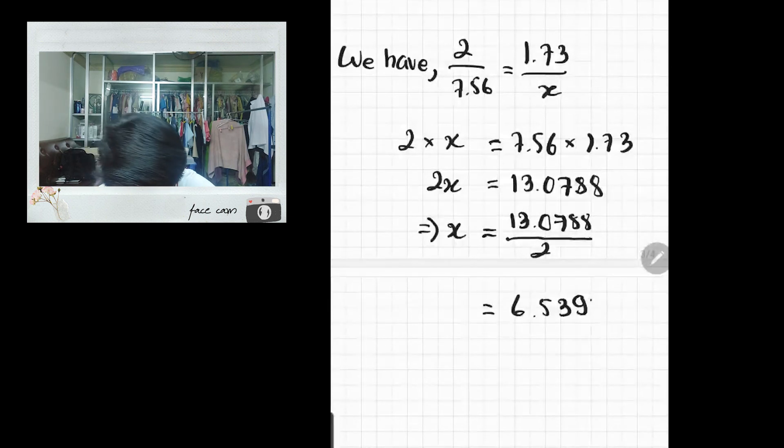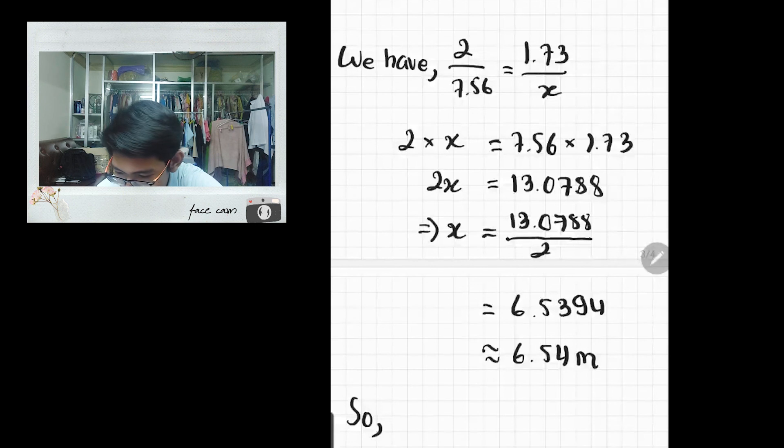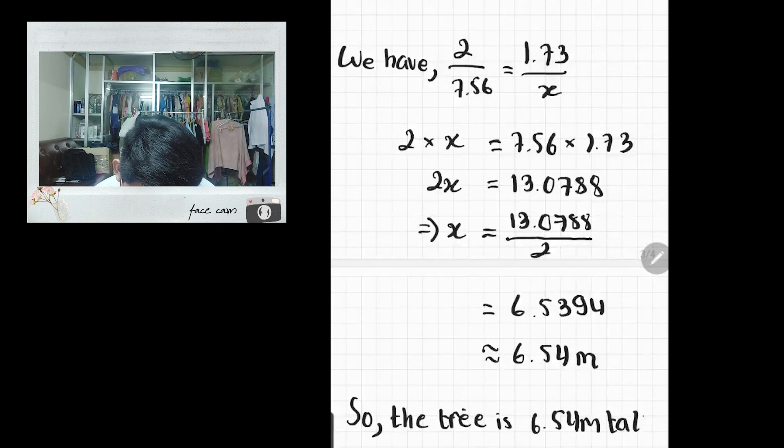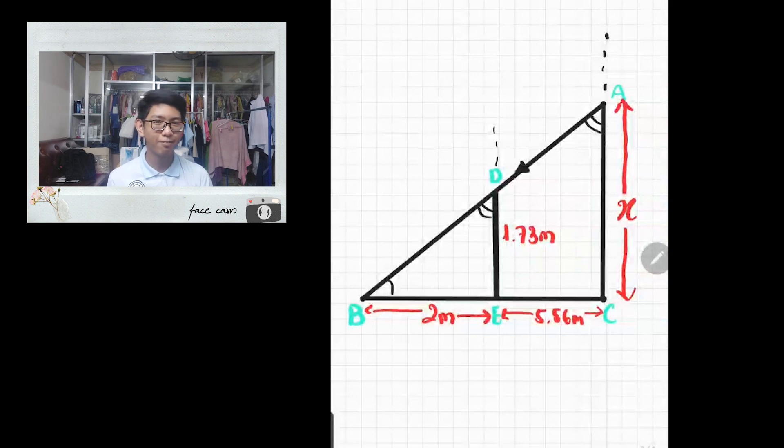The final answer should be 6.5394. Now let's round it up. It should be 6.54 meters. So in conclusion, the tree is 6.54 meters tall. And that is how you solve this math problem.